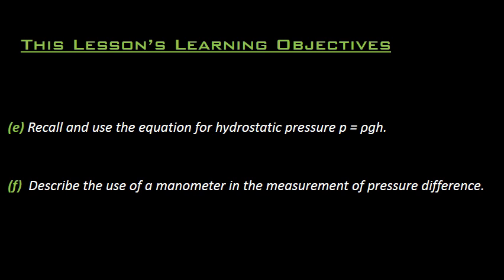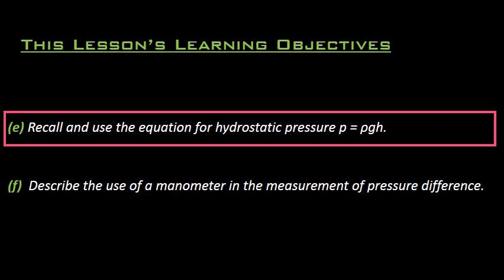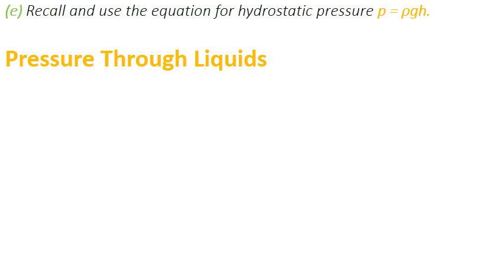The first one is E, which says recall and use the equation for hydrostatic pressure, which is P equals rho g h. Hydrostatic pressure, or in other words pressure through liquids, means that pressure in still liquid depends upon three factors.